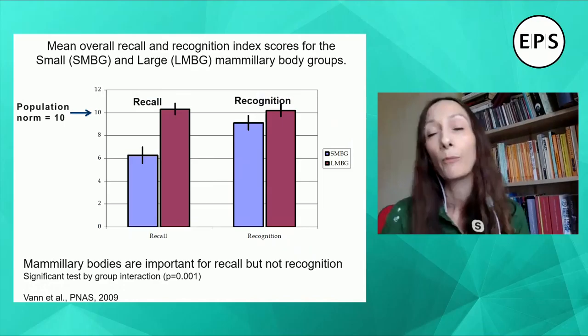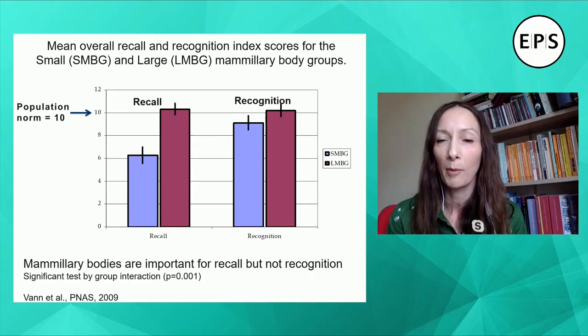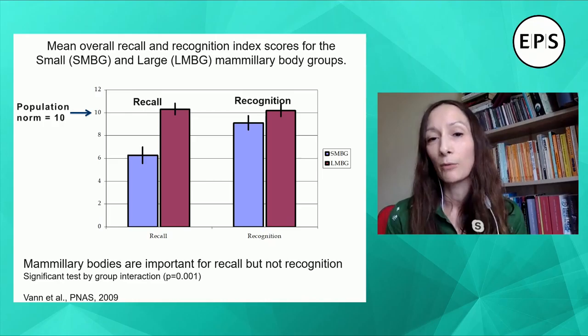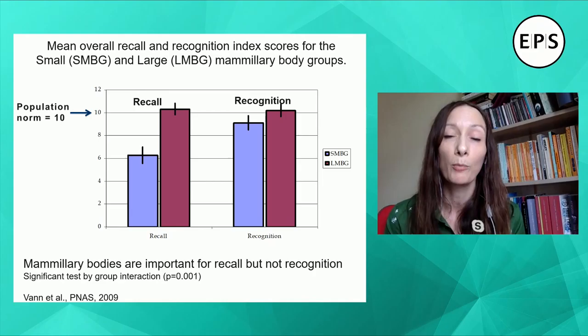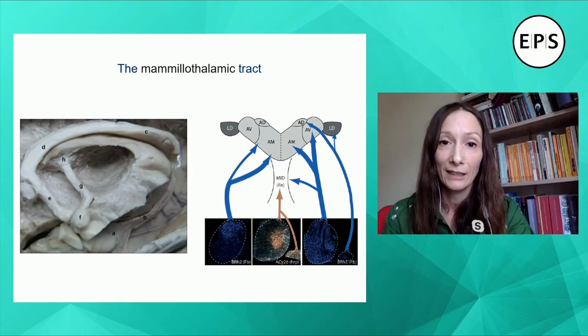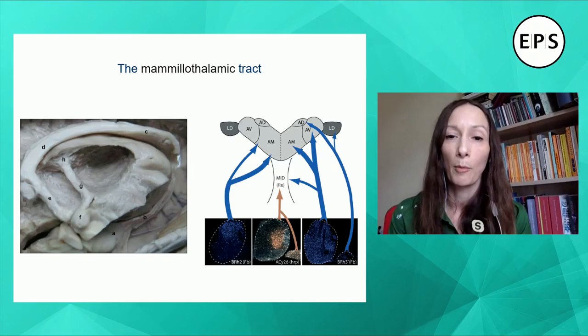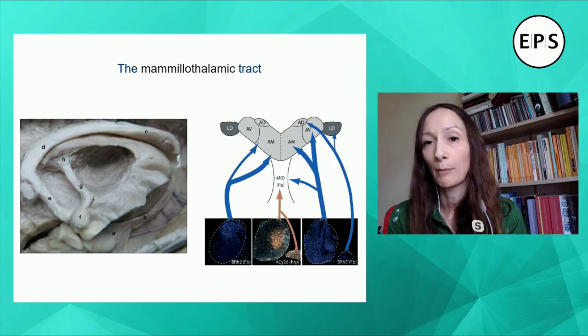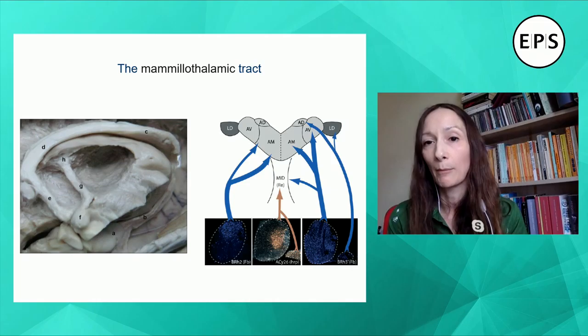We did a volumetric analysis measuring many brain regions and correlated this with memory performance. Mammillary body volume consistently correlated with performance across the Wechsler memory scale — it was the only brain region that correlated with memory. It was really recollective memory that was particularly impaired: 13 out of 14 tests of recollective memory showed this correlation. Comparing the 10 patients with the largest mammillary body volume against the 10 with the smallest, matched for everything else, we found no difference on recognition memory, but recollective memory was particularly impaired in those with small mammillary bodies.